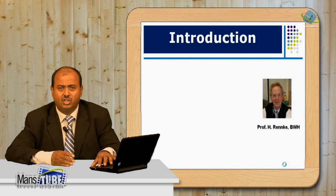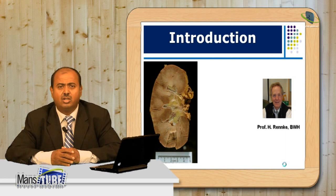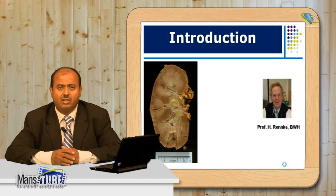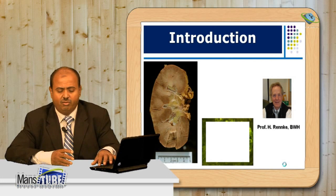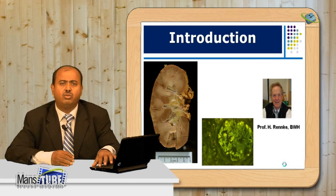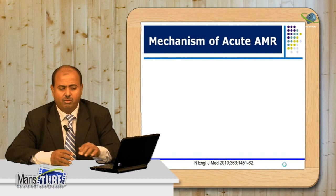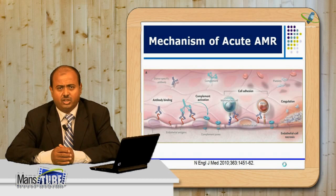If we don't respect the positive crossmatch and transplant against it without desensitization, the outcome is very poor — to the point where the patient may be discharged from the operating theater after explantation of the kidney. This is a classic histopathology of the fulminant type of antibody-mediated rejection, known as hyperacute rejection.